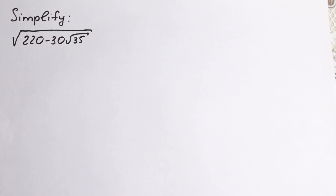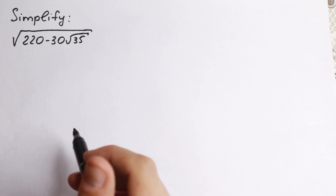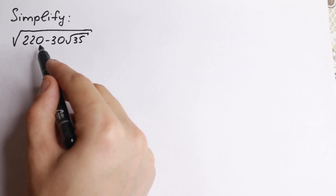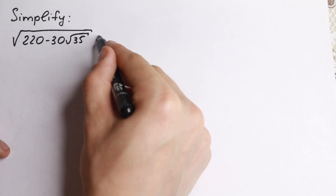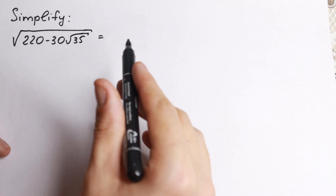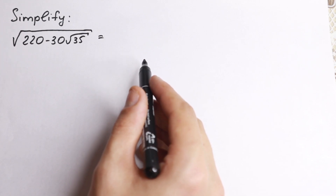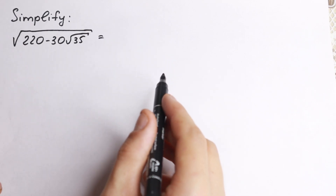Hello my friend, welcome back to MathMode and happy to see you here. Really interesting problem today — we need to simplify this expression: we have square root of 220 minus 30 square root of 35. And of course we need to find a really good approach, because simplifying with a square root sign is really complicated. I want to show you a really good approach right now.